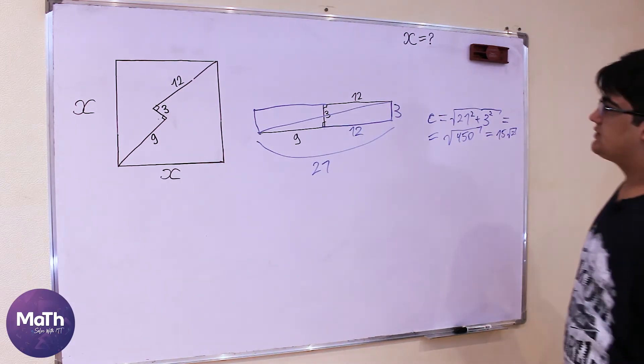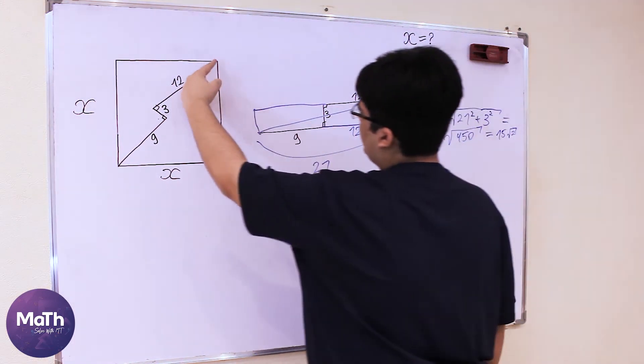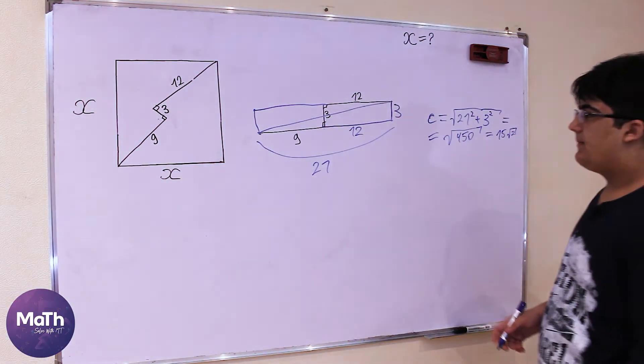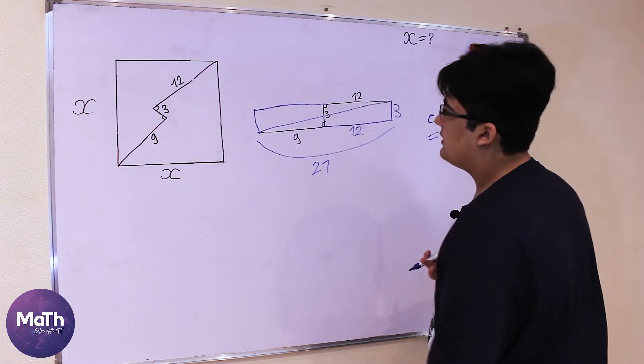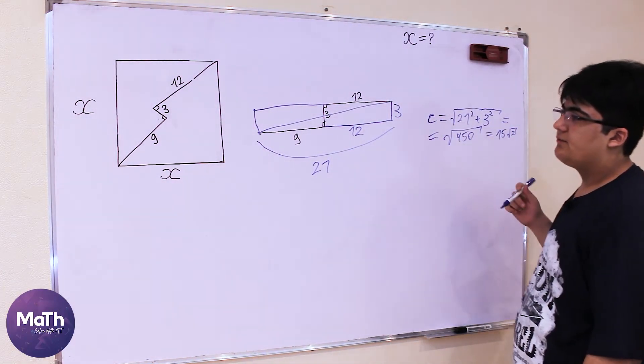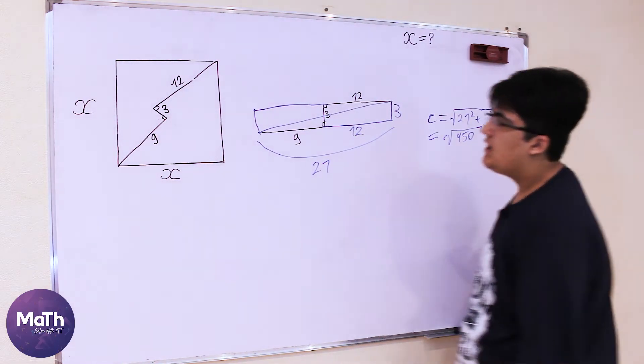We can see here that this is the diagonal of the square. A diagonal is square root of 2 times bigger than the side of the square.